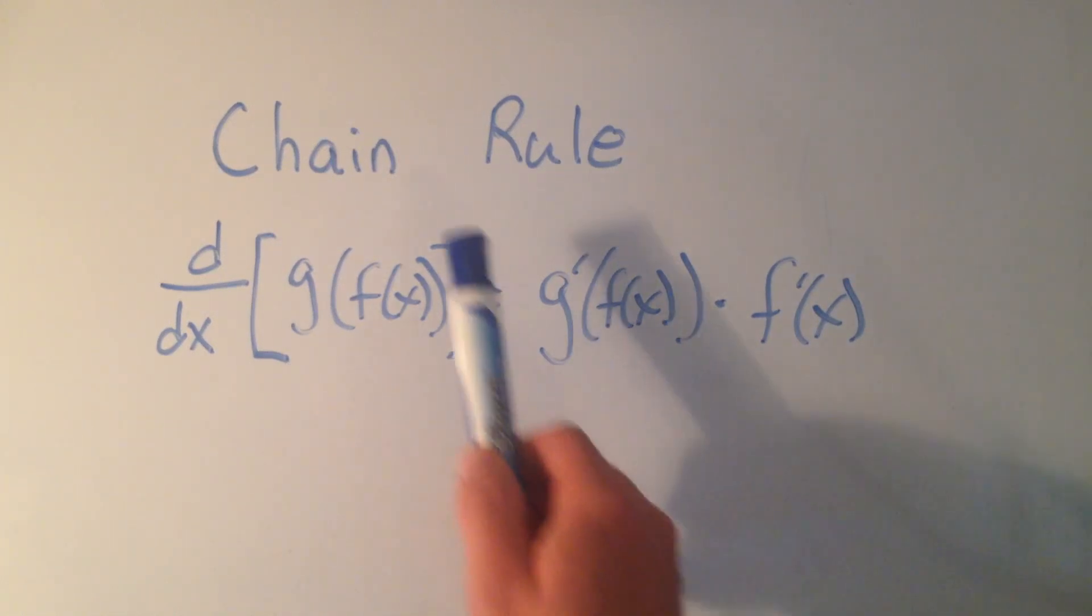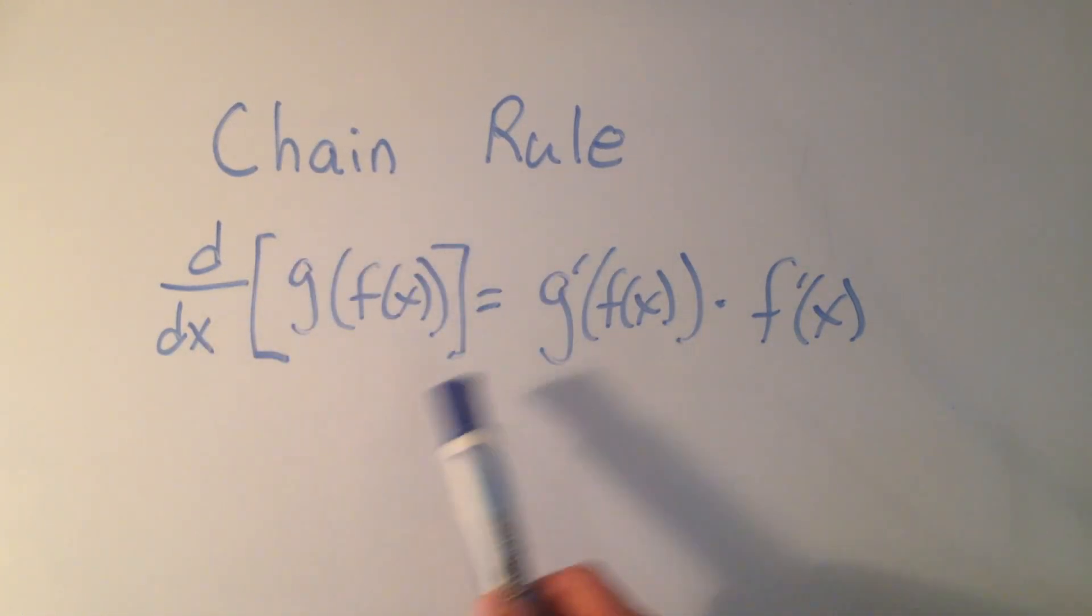So the way it works, if you want to take the derivative of a composite function, you would take the derivative of the outside function normally, still evaluate it to the original function, and then multiply by the derivative of the inside function.